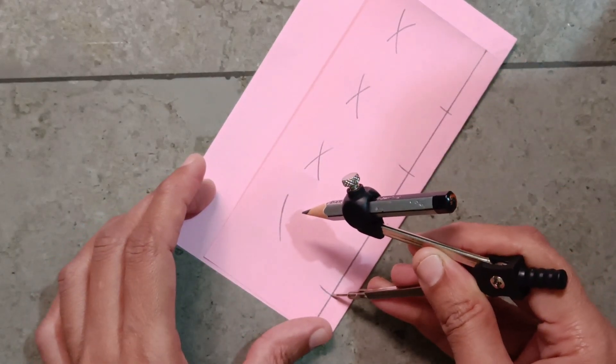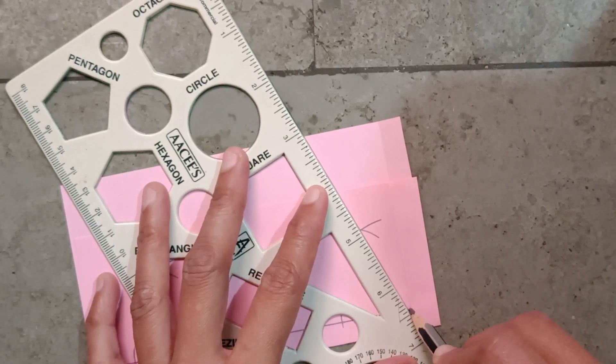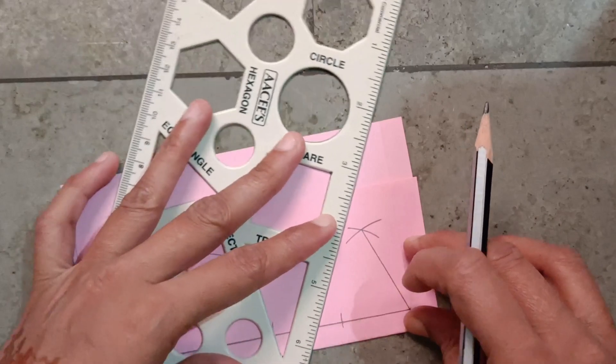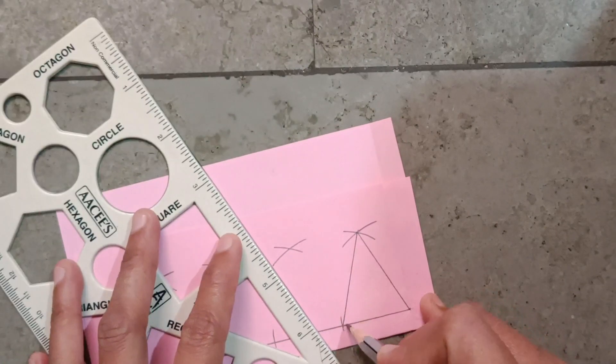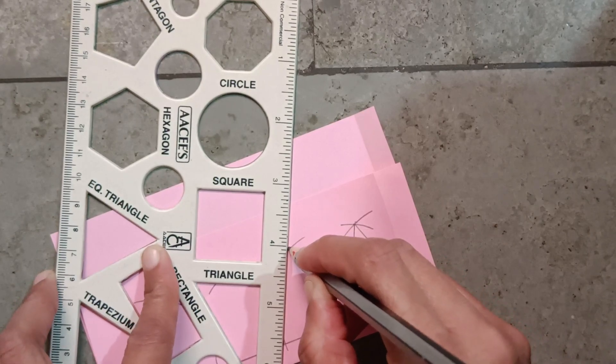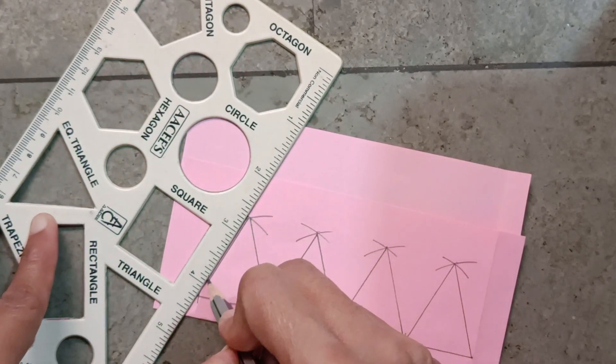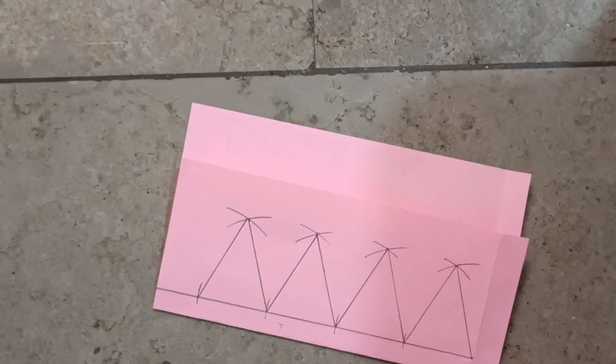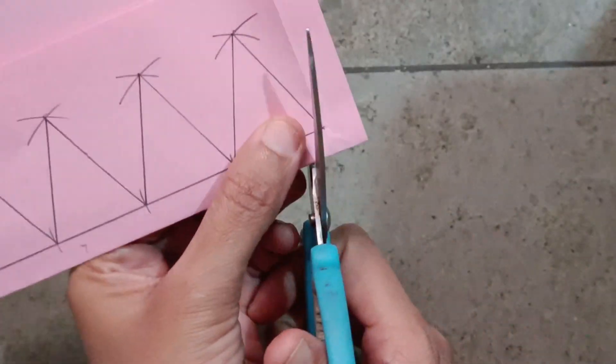And like this. Do as shown. Make curves like this - one, two, three - and cut it as I'm doing.